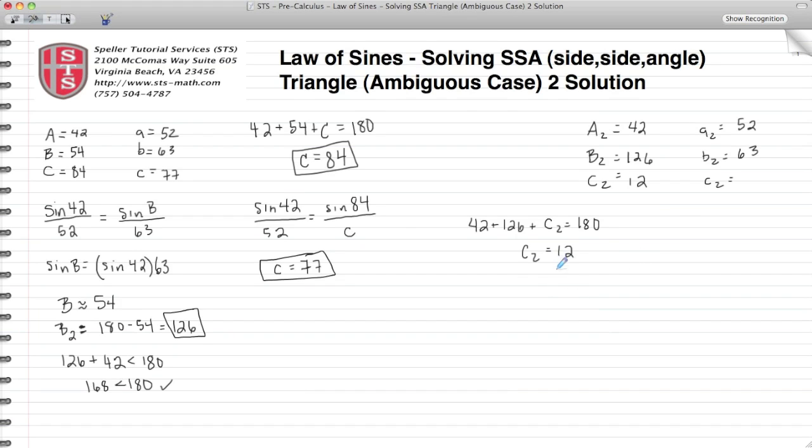And again, we fall back on the law of sines to find out the length of side C. We take the sine of 42 divided by the length of the opposite side, which is 52. Then we take the sine of 12, and we divide that by the unknown length of C sub 2. When we cross multiply and evaluate, we find out that C sub 2 is approximately 16.